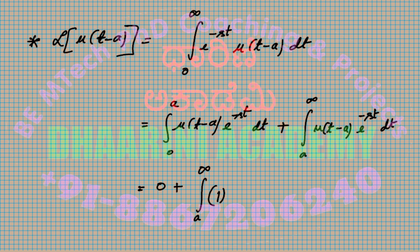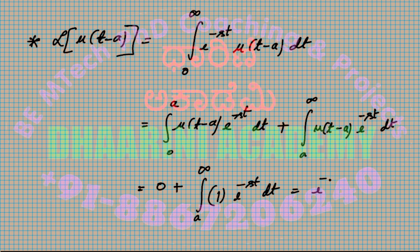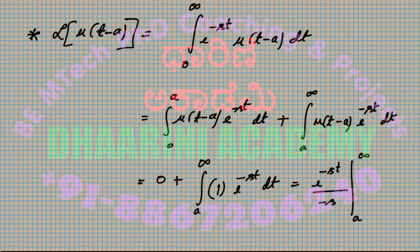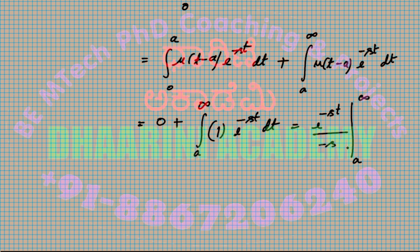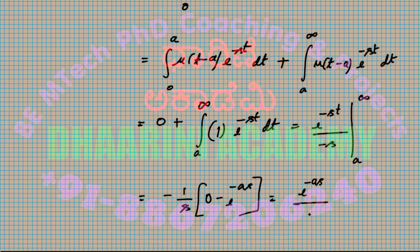Between a to infinity, u(t minus a) is 1, so we integrate e^(minus st) dt from a to infinity. Integrating gives e^(minus st) divided by minus s, evaluated from a to infinity. Substituting the limits: minus 1/s times (0 minus e^(minus as)), so the answer is e^(minus as) divided by s.